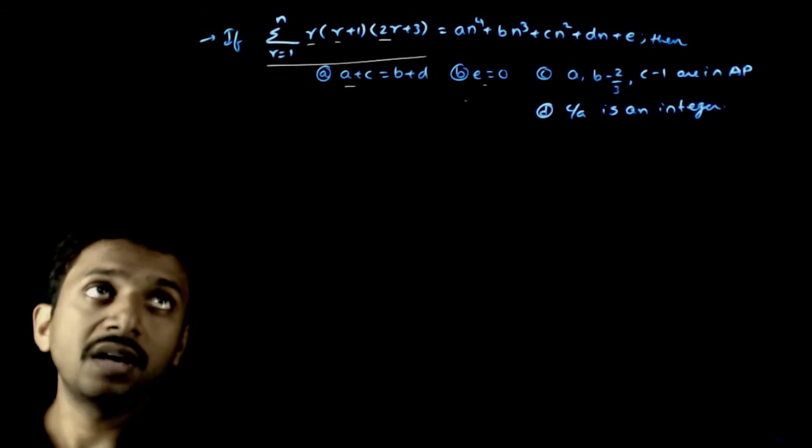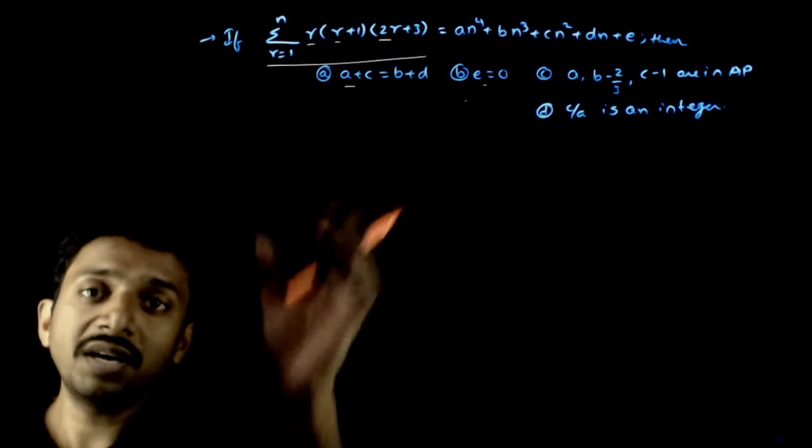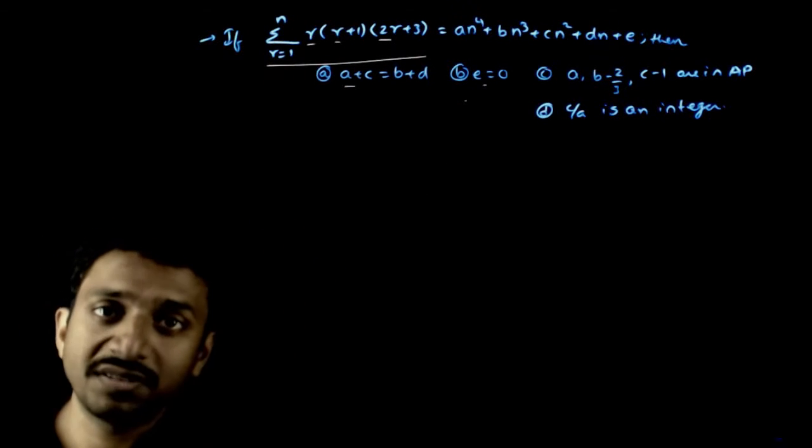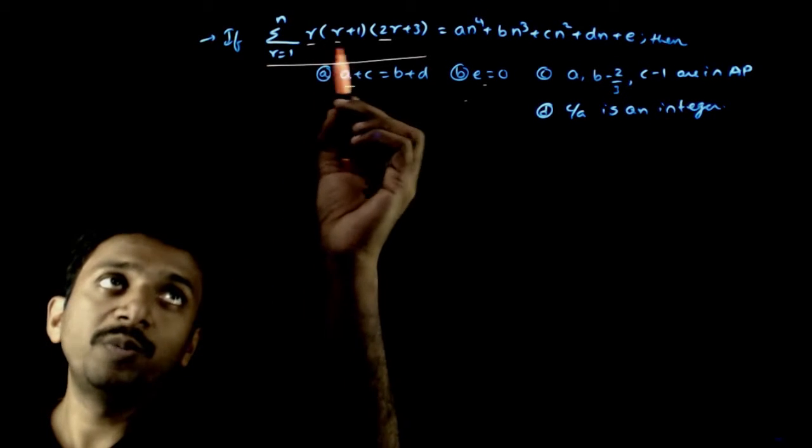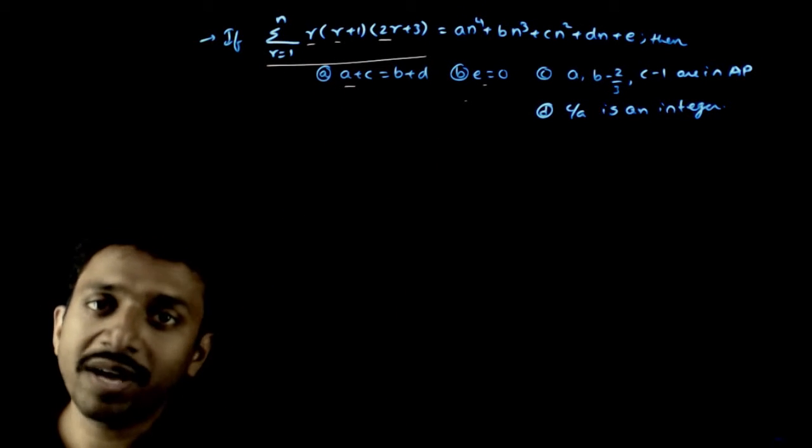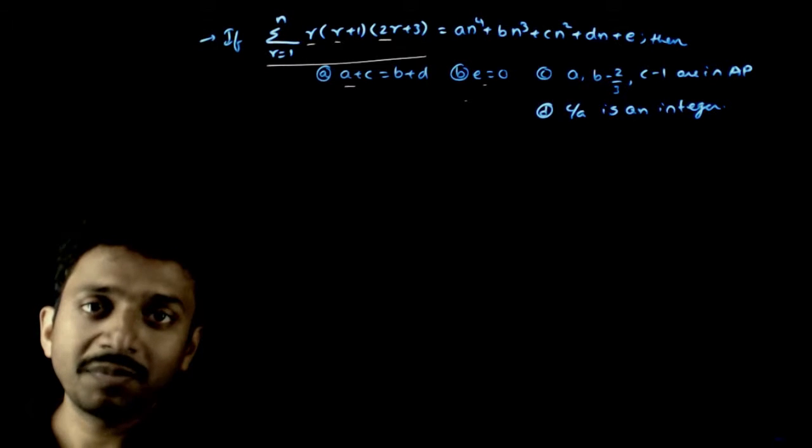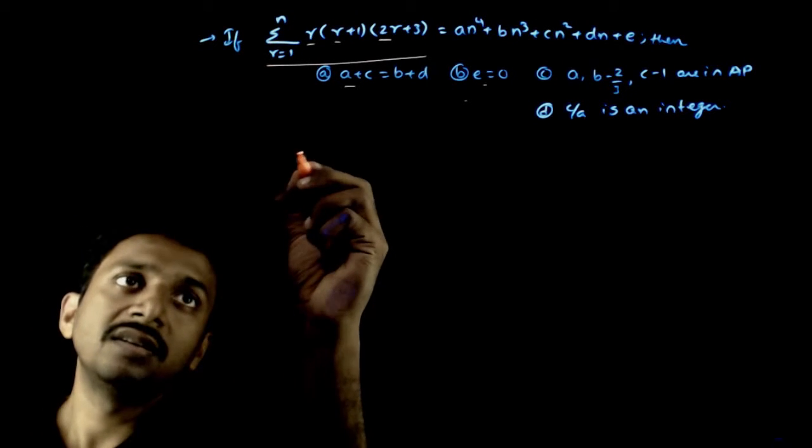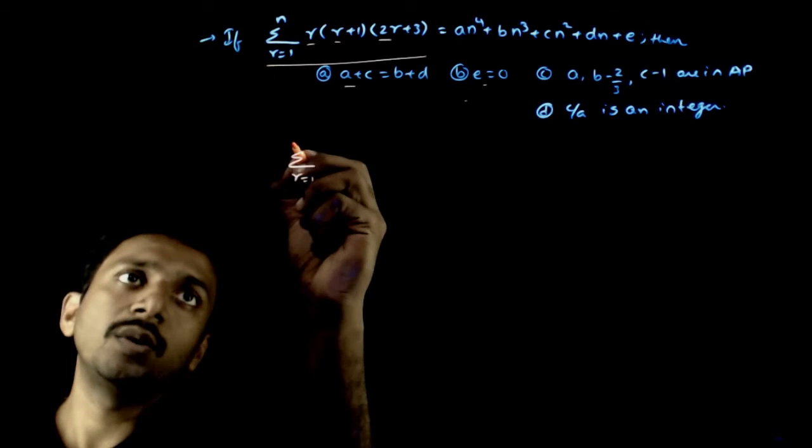Now, how do you find the sigma of r into r plus 1 into 2r plus 3? You can see that this is a cubic in r. You can directly expand it and sum it using your standard formula.